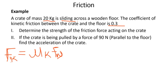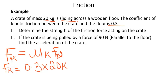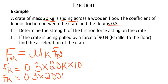So Fk equals the coefficient of kinetic friction, which is 0.3, times the normal force, which equals mass times acceleration due to gravity. The mass here is 20 kg and gravity is 10, so normal force is 20 × 10 = 200 N. Multiplying all of this: Fk = 0.3 × 200 = 60 Newton. So the normal force was 200 Newton, but the friction force is 60 Newton.